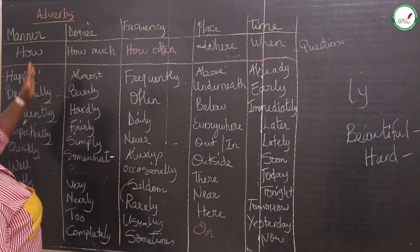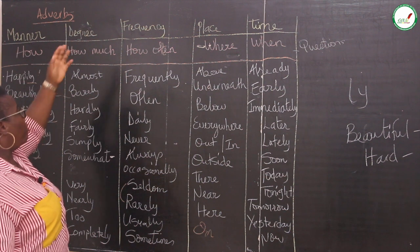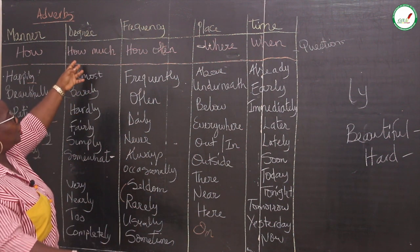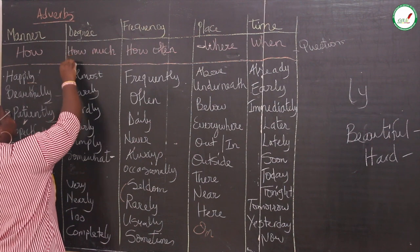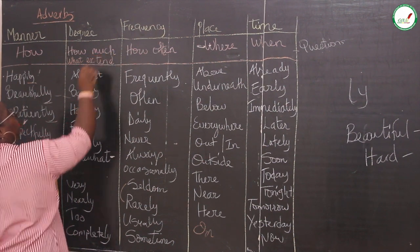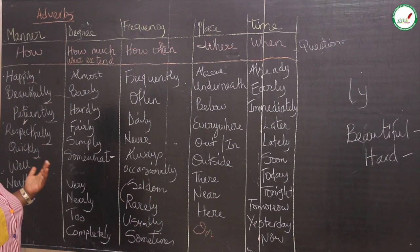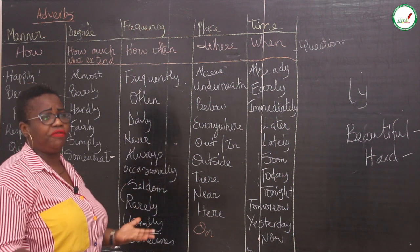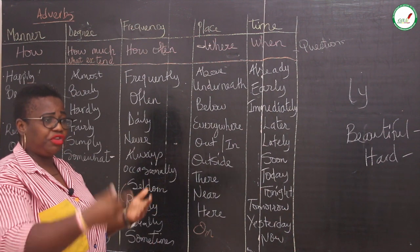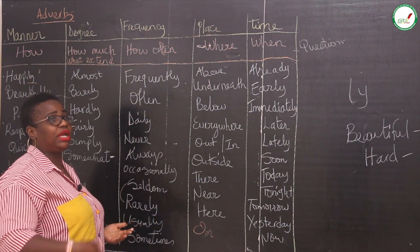If you ask yourself how is it done — how is it supposed to be presented — that tells you it's manner. If you ask yourself how much, as far as quantity is concerned, that tells you the degree — to what extent, how much, or what extent. If you ask yourself about how often — the number of times that it occurs, that you use it, that you go — that is the frequency. Frequency means multiple times, how many times it occurs.